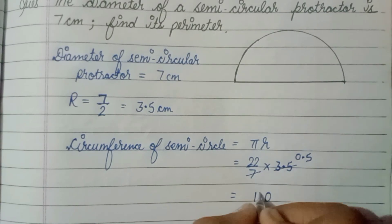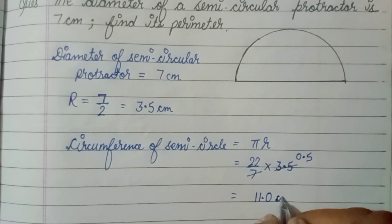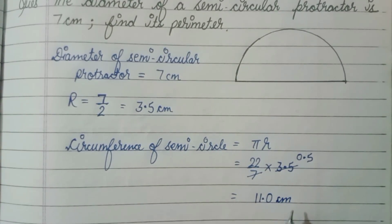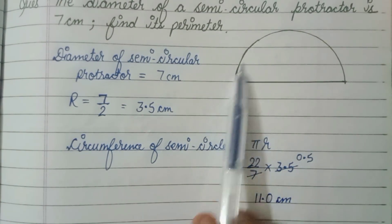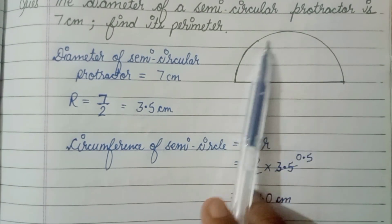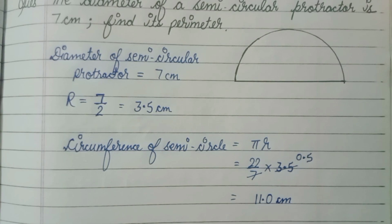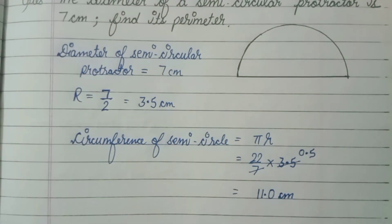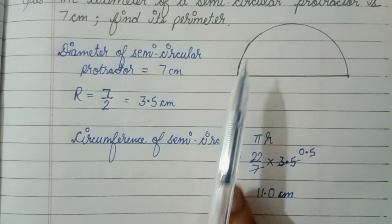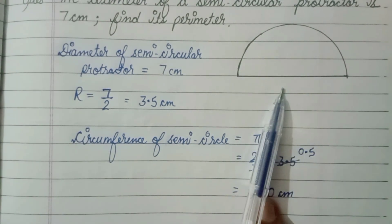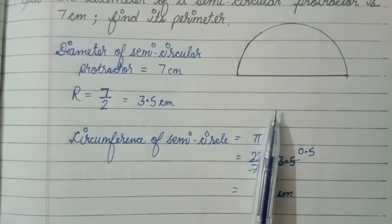Solving this, we get 11 centimeters. So 11 centimeters is the circumference of this semicircle. Now if we have the circumference and the diameter, we can easily find out the perimeter.